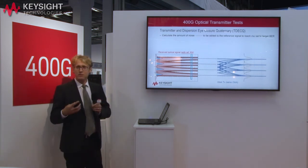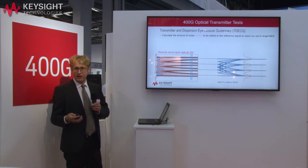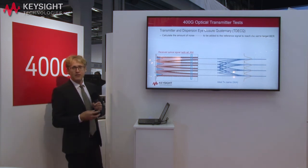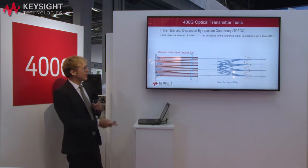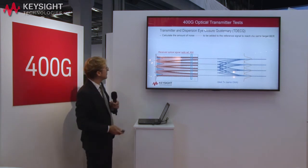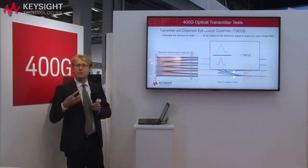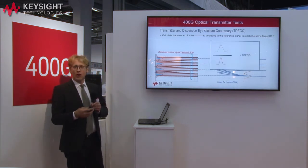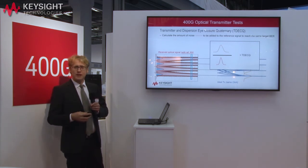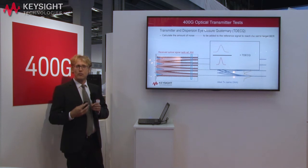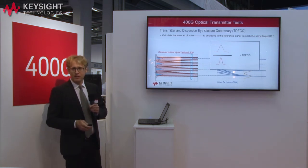We perform the same step for the reference waveform, and the virtual noise we add to achieve the target BER is displayed in yellow. The TDQ is simply the ratio of the variance of these two noises. It describes the performance of your actual transmitter compared to an ideal transmitter for the same target BER.